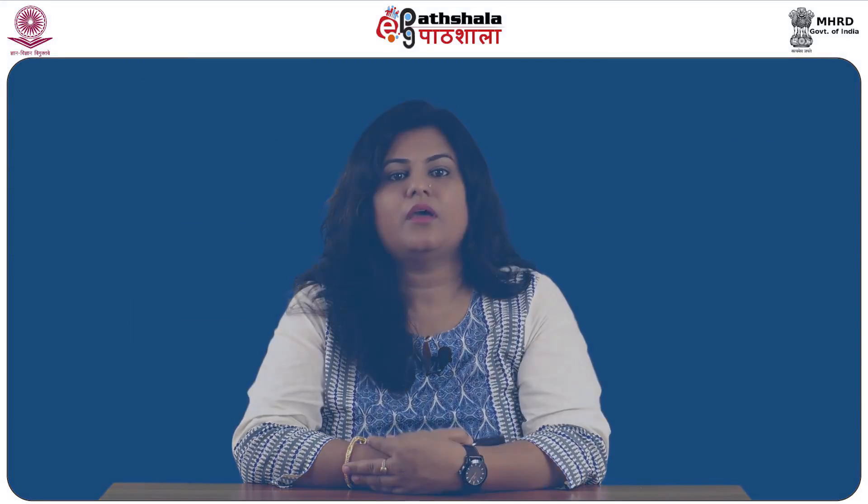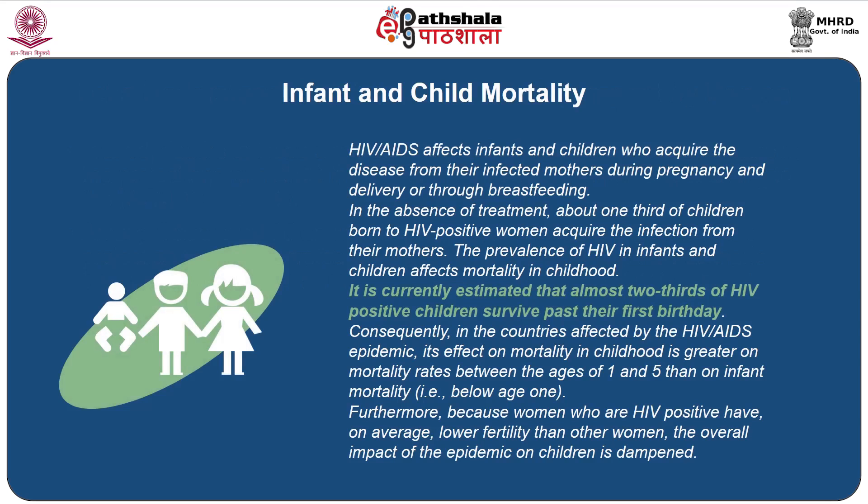Now let us look at infant and child mortality due to HIV. HIV AIDS affects infants and children who acquire the disease from their infected mothers during pregnancy and delivery or through breastfeeding. In the absence of treatment, about one-third of children born to HIV-positive women acquire the infection from their mothers. The prevalence of HIV in infants and children affects mortality in childhood. It is currently estimated that almost two-thirds of HIV-positive children survive past their first birthday. Consequently, in countries affected by the HIV AIDS epidemic, its effect on mortality in childhood is greater on mortality rates between ages one to five than on infant mortality below age one. Furthermore, because women who are HIV positive have, on average, lower fertility than other women, the overall impact of the epidemic on children is dampened.